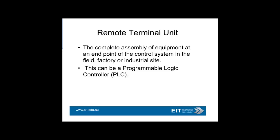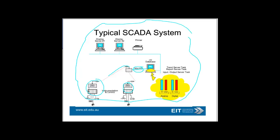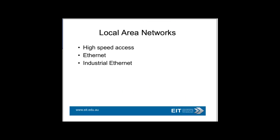Remote terminal units, or a data logger, is the actual device that collects data and does control. It could be a PLC, or programmable logic controller. A typical SCADA system is shown in this diagram. You can see the critical thing is your RTUs scattered out in the field doing data acquisition over a radio link or some sort of communication link. RS-485 would probably be the main standard now, and it's got a database with various types of networks, including Ethernet and industrial Ethernet.